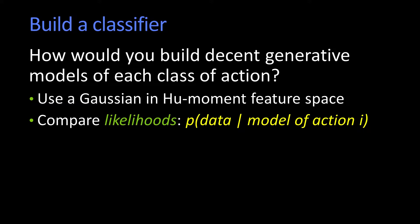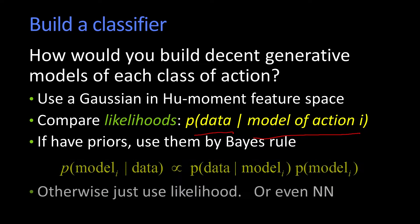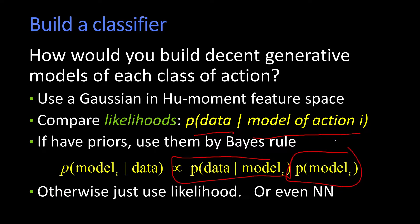Then you compare the likelihoods. The likelihood is the probability of the data given the model. So I build all the models, and when new data comes in, I evaluate the probability of the data. If I have a prior, I use Bayes' rule: I take my likelihood, multiply it by the prior of my model, and that's proportional to my total posterior. If I don't have a prior, I might just select whichever one has the highest likelihood.